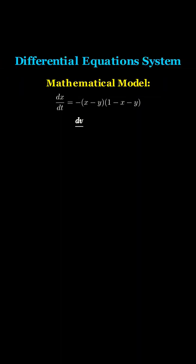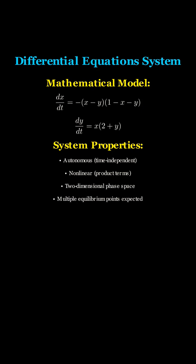Let's begin by examining our system of differential equations. We have two equations that describe how the variables x and y change over time. The first equation is dx/dt equals negative of x minus y times 1 minus x minus y. The second equation is dy/dt equals x times 2 plus y.